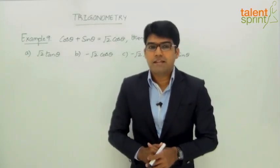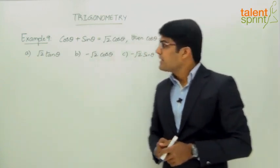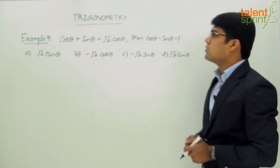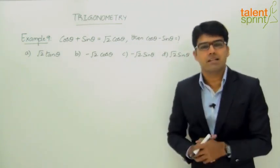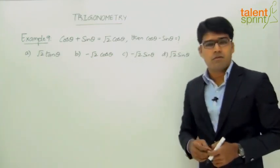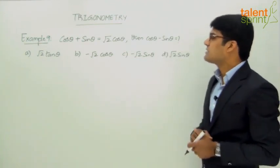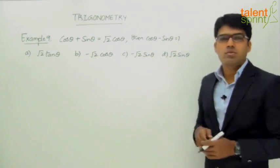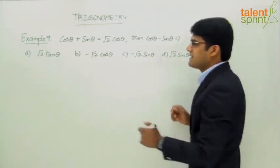Let us now take example 9, which is one of the earlier SSE exam questions. It says cos theta plus sin theta equals root 2 cos theta, then cos theta minus sin theta equals to what? We have different answer options in the form of theta: root 2 tan theta, minus root 2 cos theta, minus root 2 sin theta, and root 2 sin theta. So let's work on this and find out what the correct answer is.